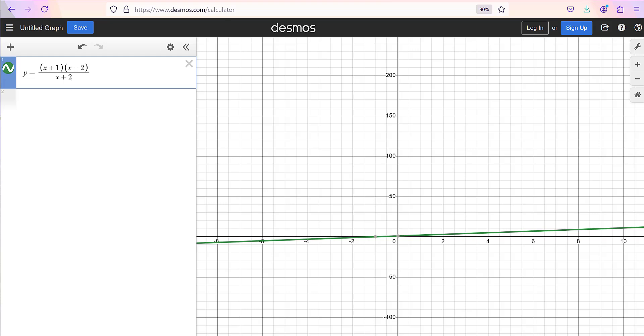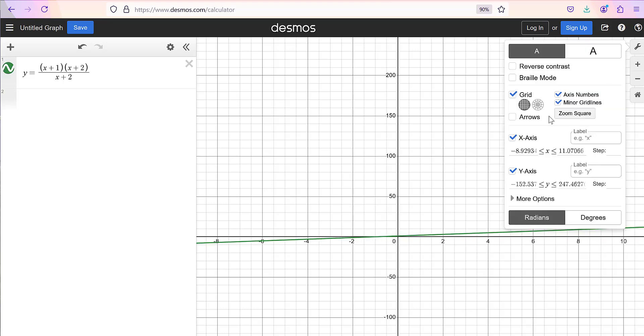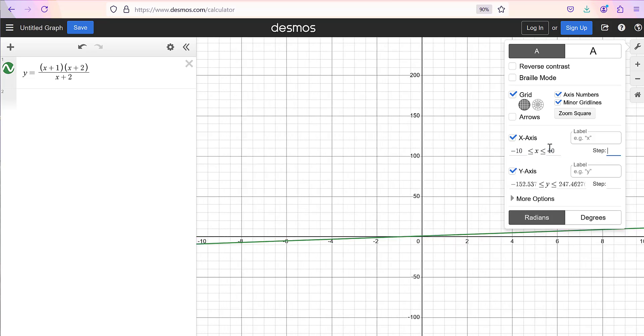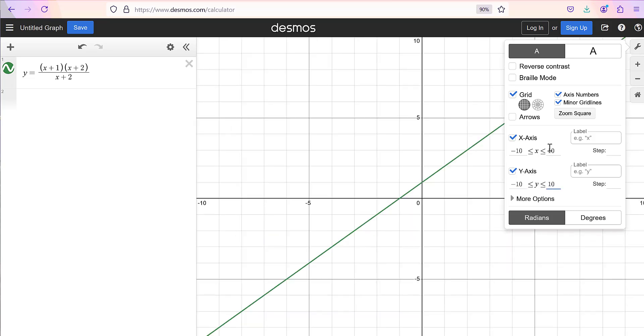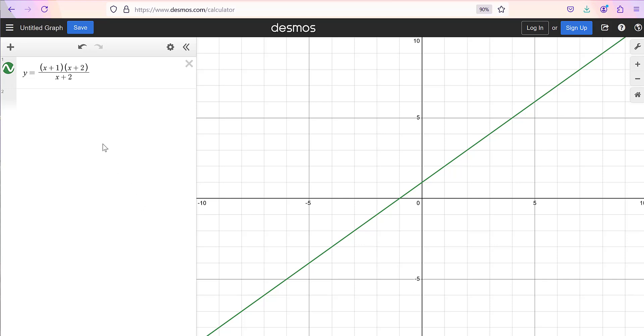So I will readjust my viewing window for the graph, and probably something like negative 10 to 10 would work well here. But what's a little bit suspicious is it looks like we have a linear equation. In fact, it looks like we have the line y equals x plus 1.